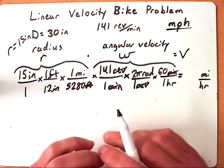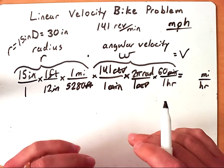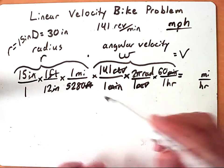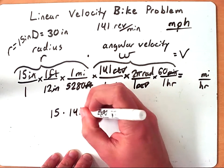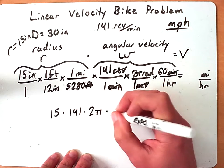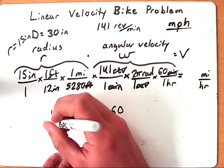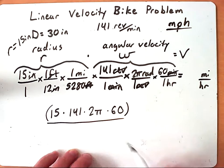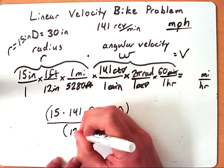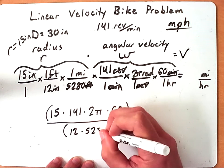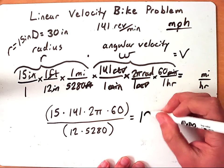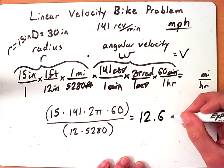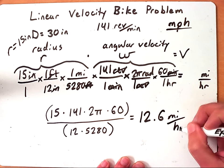So at this point, we want to take any significant number from the top and bottom and pull them out. Okay, so we don't need to worry about the ones, because they are not going to change anything. So that means on top, we want to get 15, we want 141, we want 2π, and we want 60. All right, so we can multiply all those together and put them over 12 times 5,280. And so we can take this, plug this into our calculator, and if we do, we're going to get that the bicycle is going about 12.6 miles per hour.